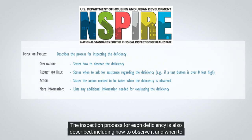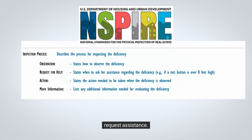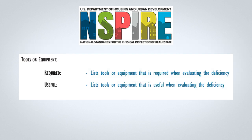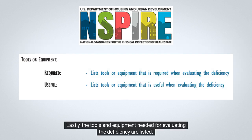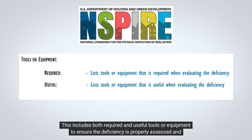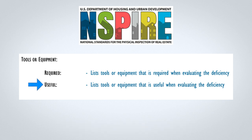The inspection process for each deficiency is also described, including how to observe it and when to request assistance. This includes both required and useful tools or equipment to ensure the deficiency is properly assessed and addressed.